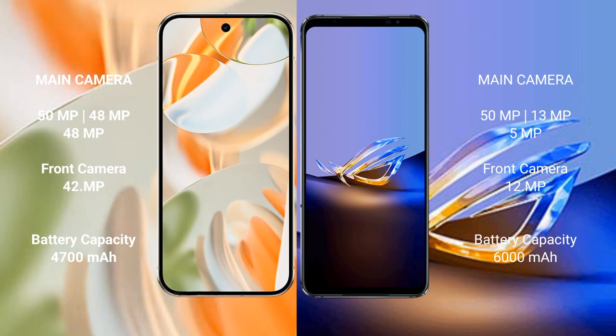The Google Pixel 9 Pro has a 4600mAh battery with 27W fast charging support. The Asus ROG Phone 6D Ultimate has a 6000mAh battery with 65W fast charging support.